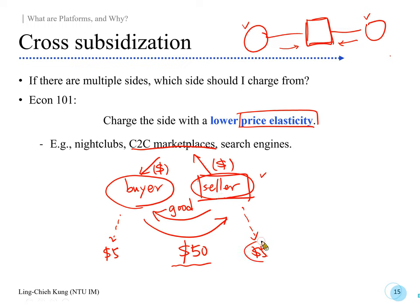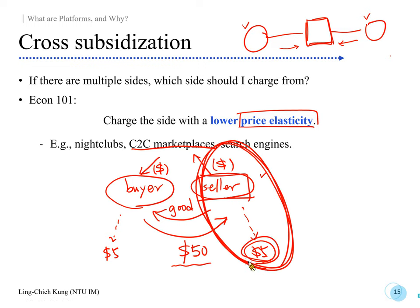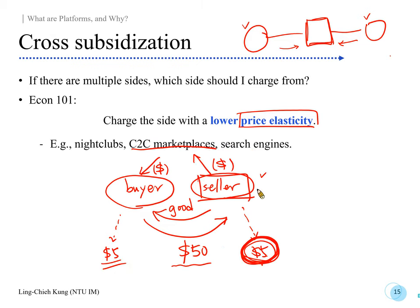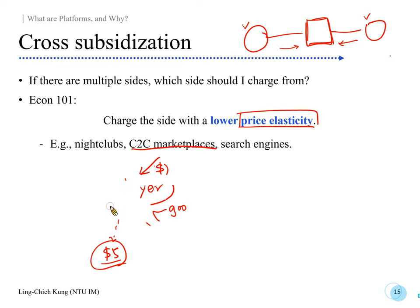So the seller or supplier side typically has lower price elasticity — they are more willing to pay a small fee to earn the larger transaction amount. That's why you should charge the side with lower price elasticity, the side that is not so sensitive to price changes. If you charge buyers and they don't want to pay, many of them leave. But if you charge sellers five dollars, most sellers still stay.